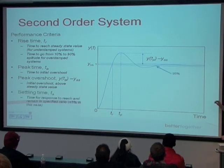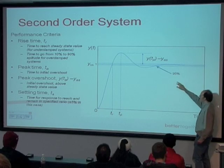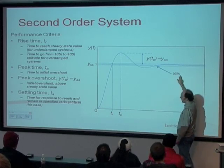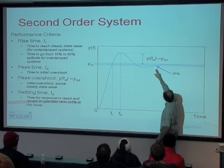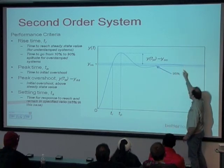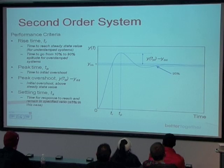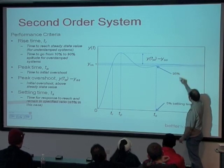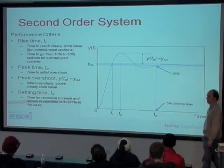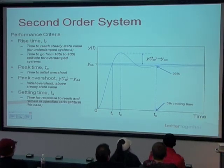Settling time T_S is defined as the time for the response to settle within some band around the final value. Often the value used is plus or minus 5%, so 95% to 105% of the final value. Once you reach that point, any response beyond will be within that band. We use the 5% settling time. If we had a 2% settling time, we'd be further along — that would be the point at which the response is within 2% of the final value. There are different criteria; we'll generally use 5% because if we're within 5% of our final value, that's good enough.